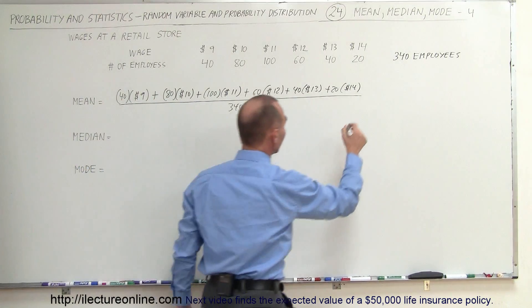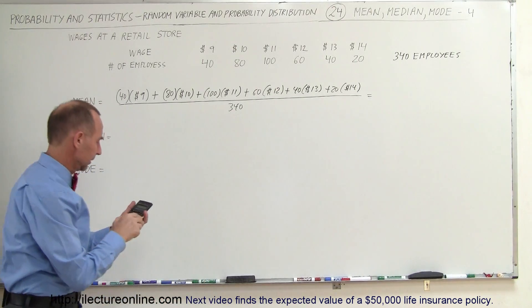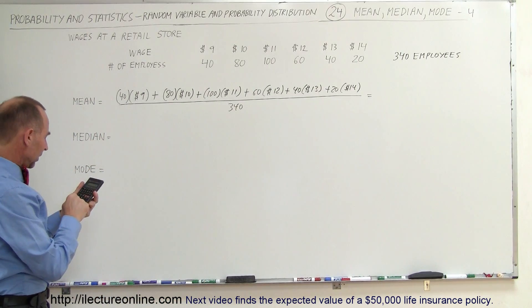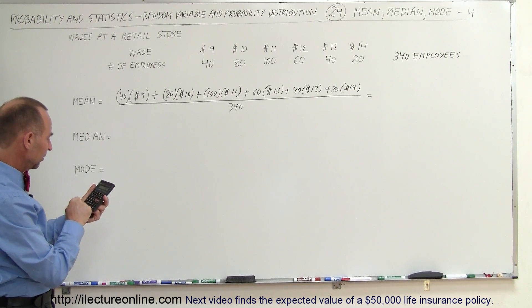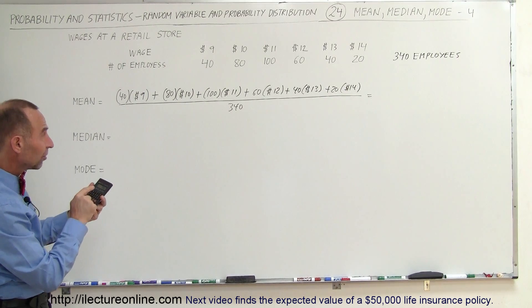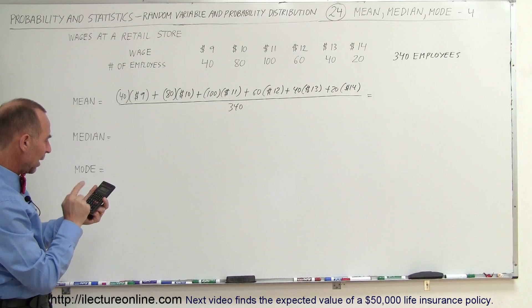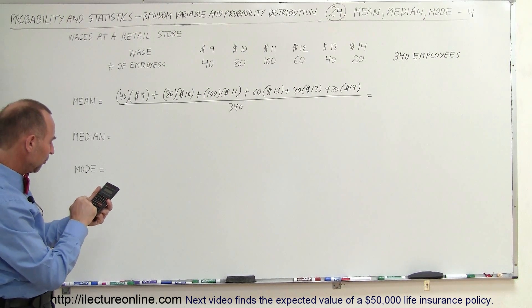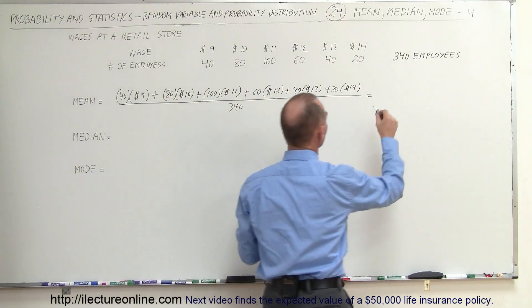And so basically, if we go ahead and calculate that, let's go ahead and get a calculator. So we get 360 plus 800 plus 1100 plus 720 plus 520 and plus 280, and we divide the whole thing by 340. Then on average, the employees there earn $11.12.